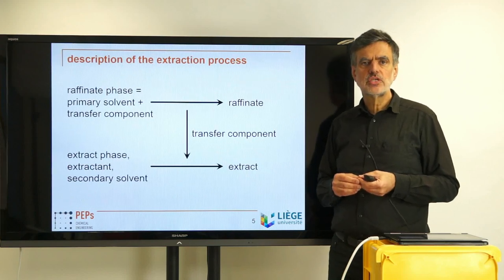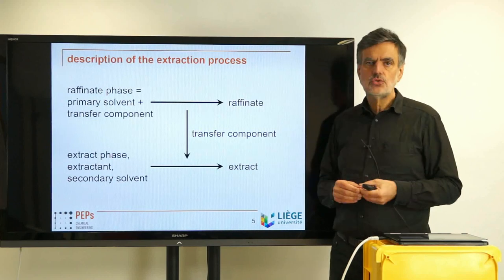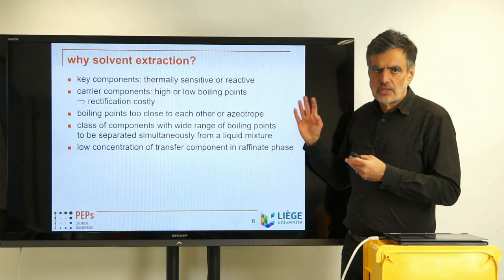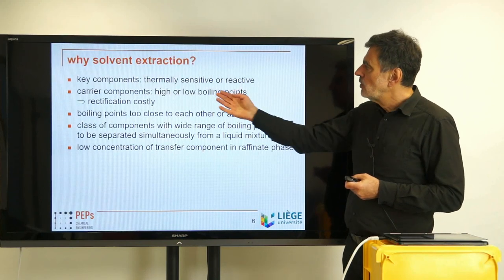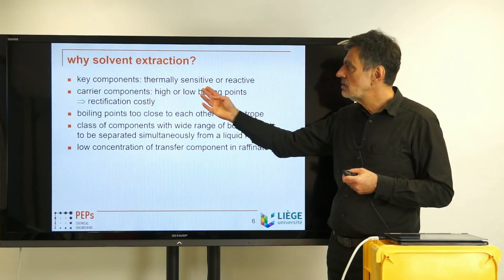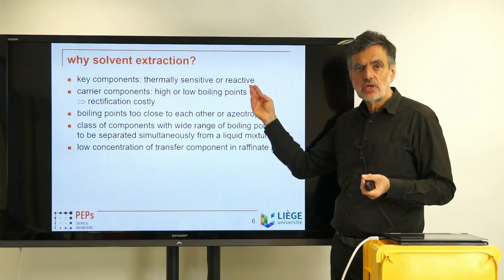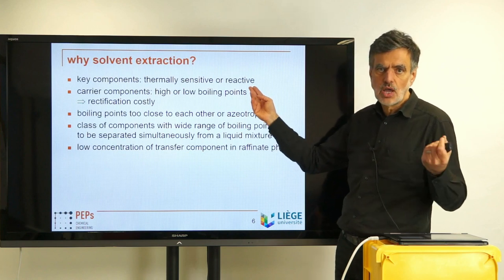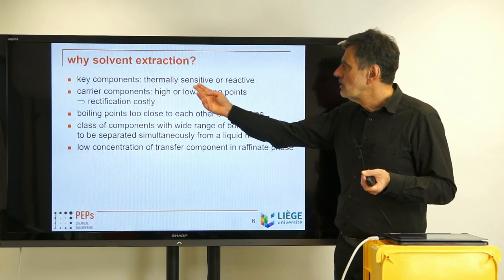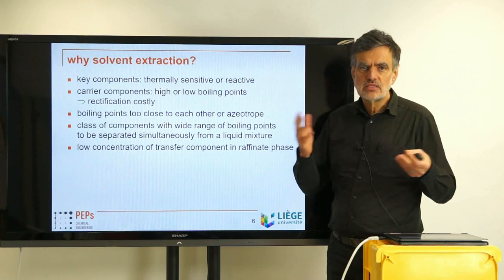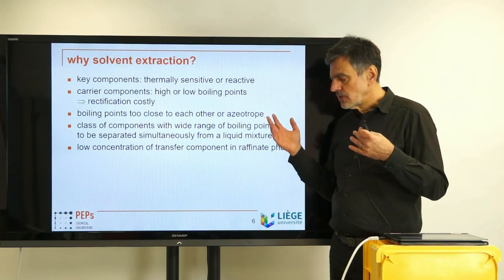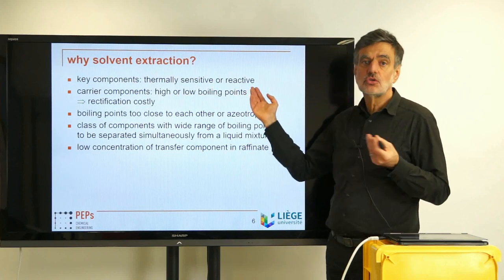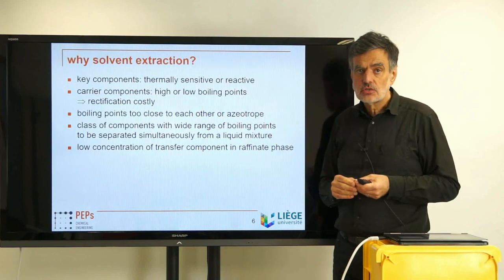So in which cases do we need to use extraction? It's not a bad second choice — it has certain advantages. One case where you can't use distillation is if the key components are thermally sensitive or highly reactive, since reaction rates increase with temperature and you want a cold process. Extraction can occur at ambient temperatures. Thermally sensitive components include pharmaceuticals, biologically active compounds, enzymes, amino acids, food ingredients, and dyes — all of these may be thermally sensitive, so you can't distill them. In that case you can use extraction.